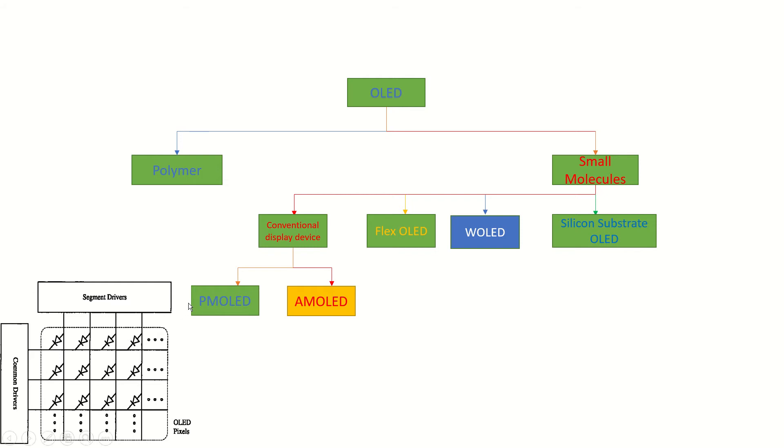So how does the passive matrix OLED work? At a specific time, when providing a driving pulse to a specific horizontal line of electrodes, at the same time, all columns of electrodes are given driving pulses.